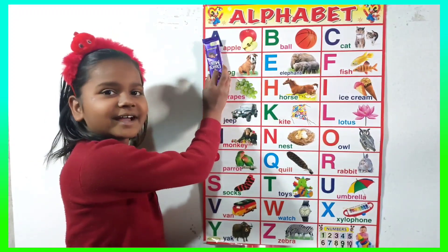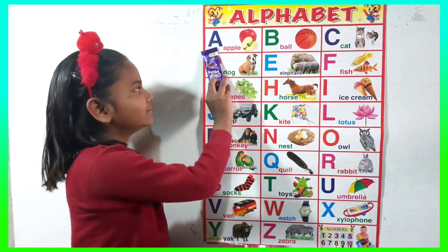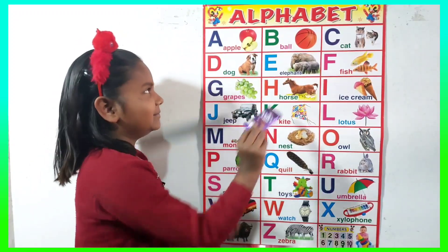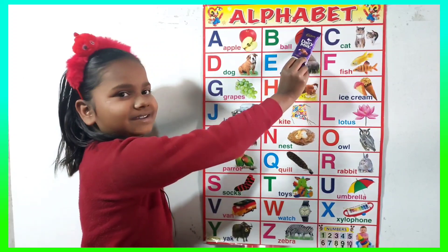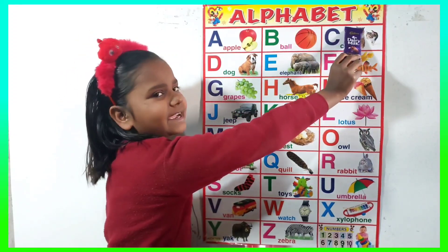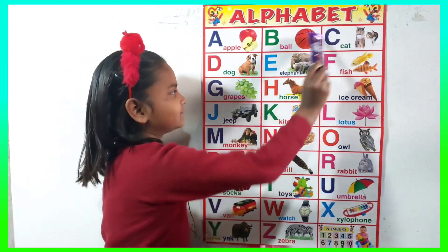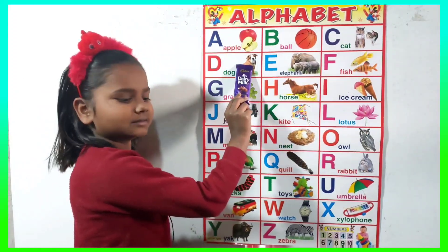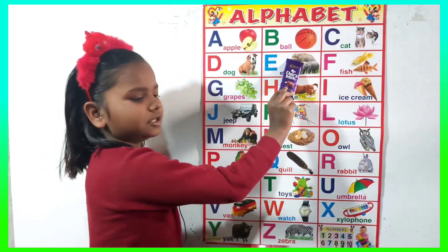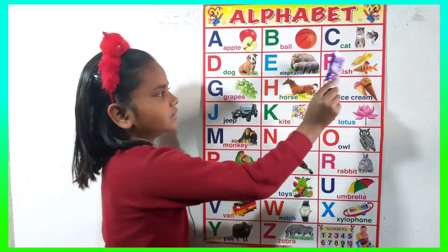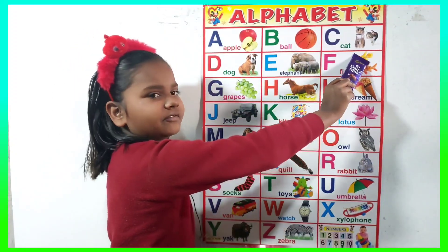A for apple, B for wolf, C for cat, D for dog, E for elephant, F for fish.